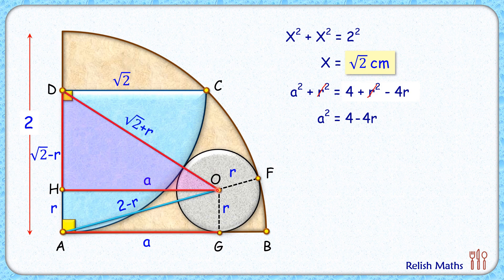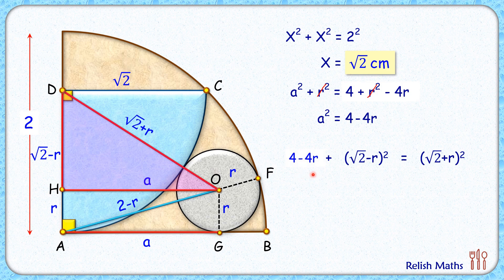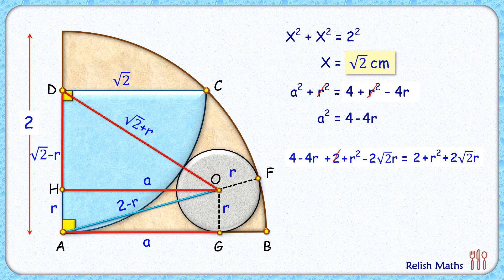Now in triangle OHD, applying Pythagoras theorem, we get a² + (√2 − r)² = (√2 + r)². Substituting a² = 4 − 4r, and expanding (√2 − r)² and (√2 + r)² using the (a ± b)² formula, both sides have 2 as a common factor and the r² terms cancel.